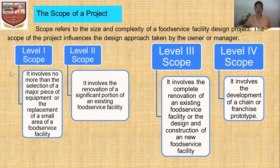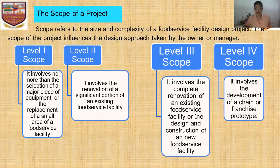We have Level 1 scope, which involves no more than the selection of a major piece of equipment or the replacement of a small area of a food service facility. Level 2 involves the renovation of a significant part of an existing food service facility. Level 3 involves the complete renovation of an existing food service facility or the design and construction of a new food service facility. Level 4 involves the development of a chain or franchise prototype.